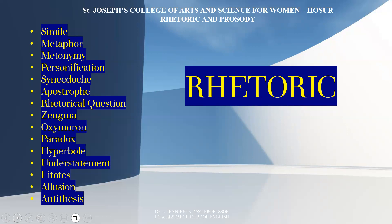Litotes: In Greek, it is used for plain or simple. It is a special form of understatement — normally we make affirmative expressions by refusing the opposite. Allusion: it could be a brief reference, explicit or indirect, about a person, a place, an event, or any other literary work. Antithesis is contrast or opposition in meaning emphasized by parallel grammatical structure. Apart from this, there are many other terms in rhetoric like alliteration, consonance, assonance, onomatopoeia, and pathetic fallacy — these are key terms where poetry is more emphasized.